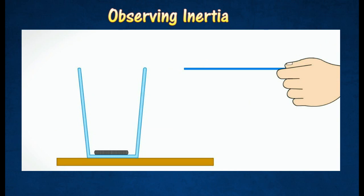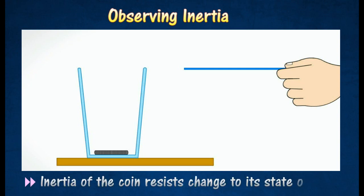This demonstration shows that the inertia of the coin resists change to its state of rest. The coin is able to fall straight into the cup, because the force of friction that acts on it is too small to move it over a large distance over a short period of time.